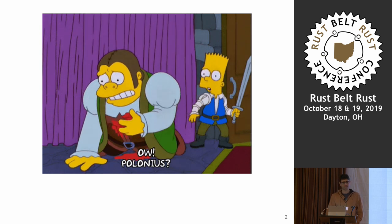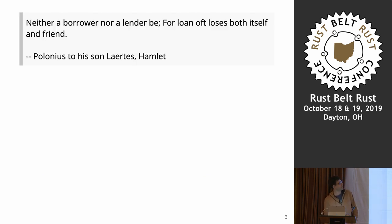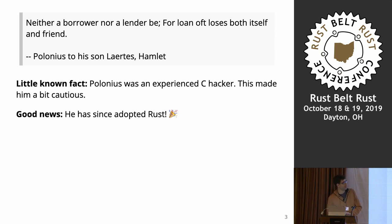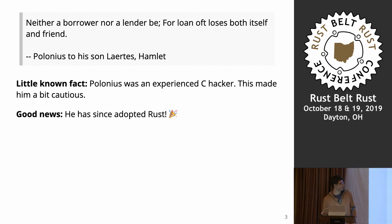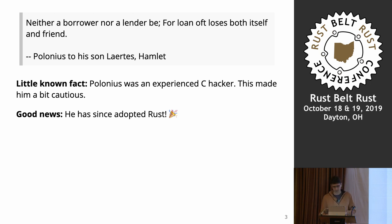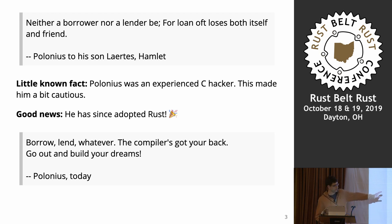He's also famous for this quote that he says to his son: "neither borrower nor lender be, for loan oft loses both itself and friend." It's not a well-known fact, but Polonius was a C hacker, and he was passing on professional advice to his son, saying be really careful when you mess with references. So the good news is he didn't actually die in Hamlet. He recuperated, read the excellent Rust Programming Language book by Carol Nichols and Steve Klabnik, got really into it, adopted Rust, and has since given a new quote: "Borrow, lend, whatever. Compiler's got your back. Go out and build your dreams."